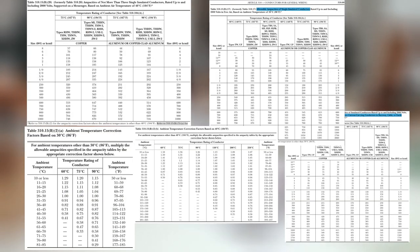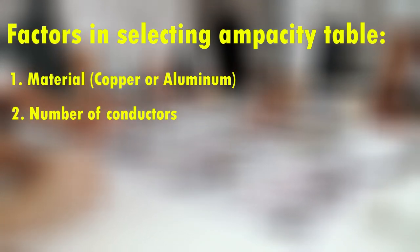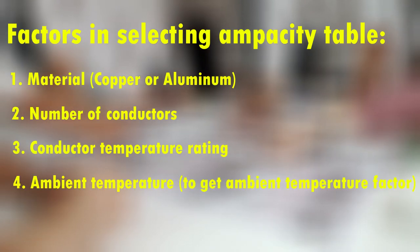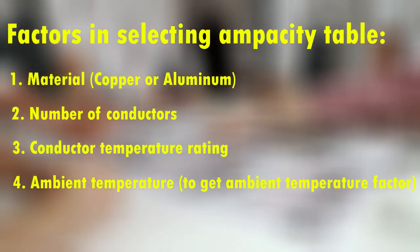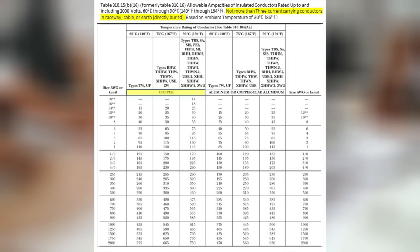We have a table from the National Electric Code (NEC) with different tables provided for ampacity rating. We need to consider several factors: copper or aluminum conductor material, the number of conductors, conductor temperature rating, and ambient temperature. By knowing the actual ambient temperature, we can select the appropriate ambient temperature correction factor table. For this example, we will use the table with the following conditions: copper wire, not more than 3 conductors, 60°C to 90°C temperature rating, and 30°C ambient temperature.